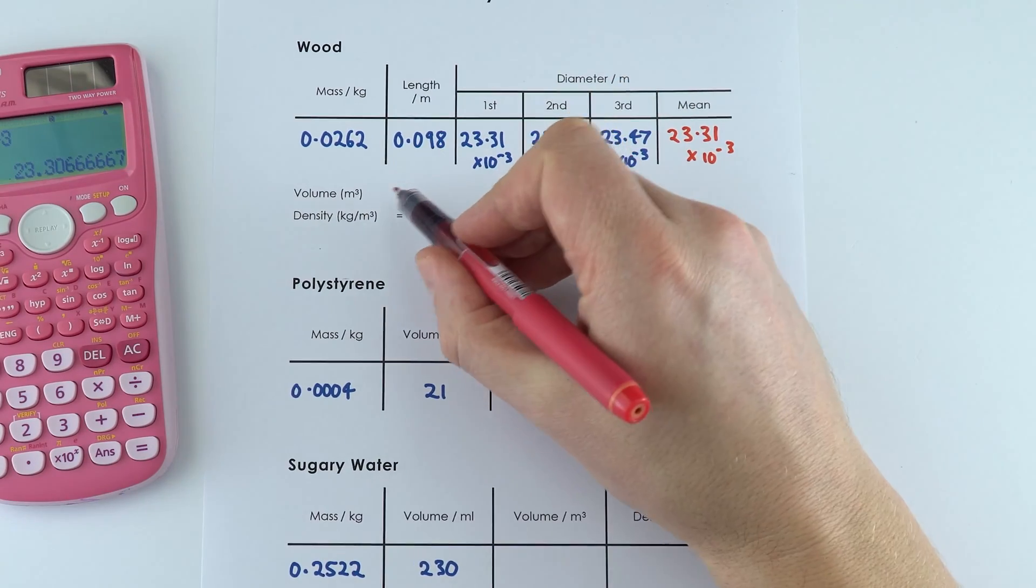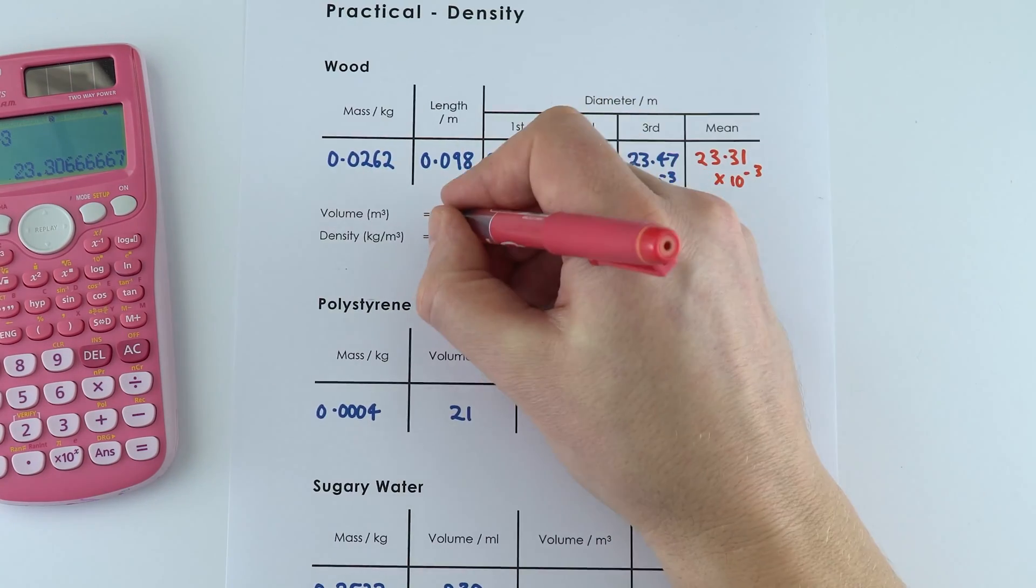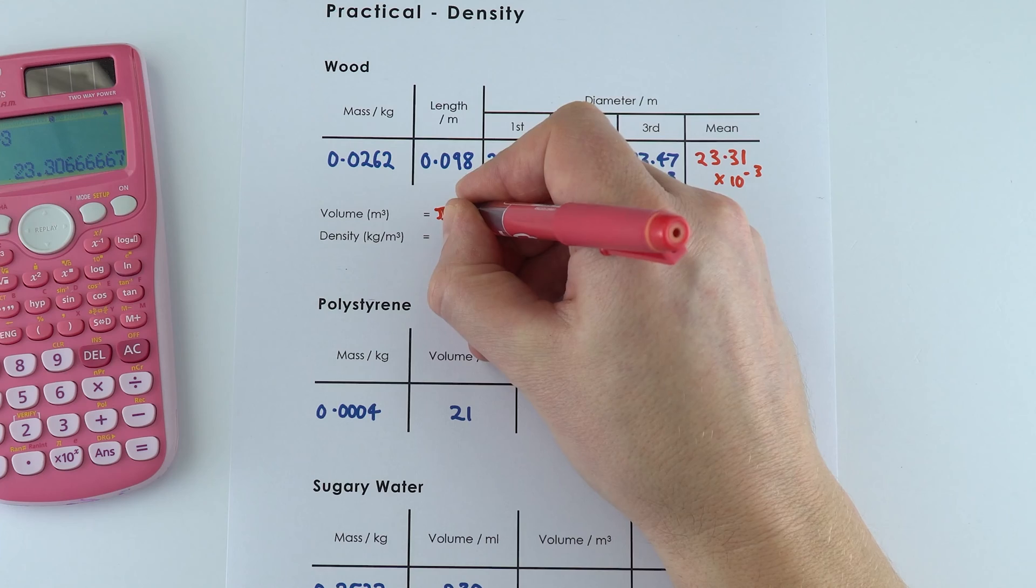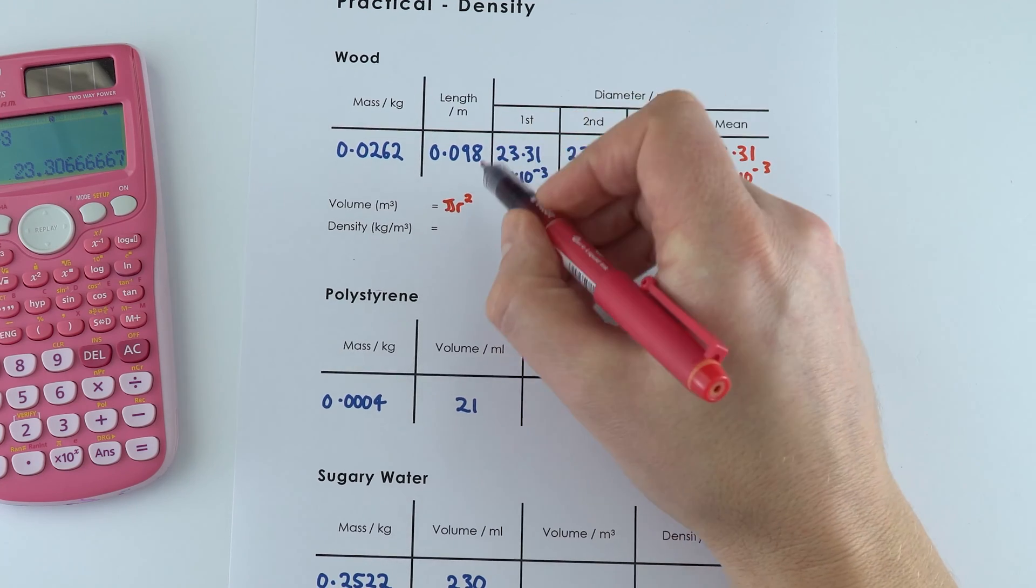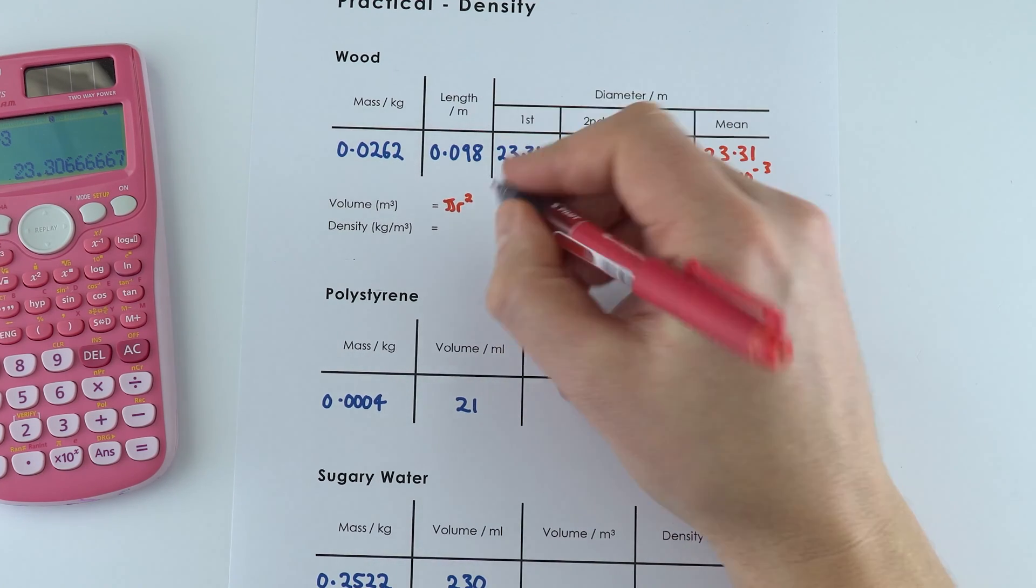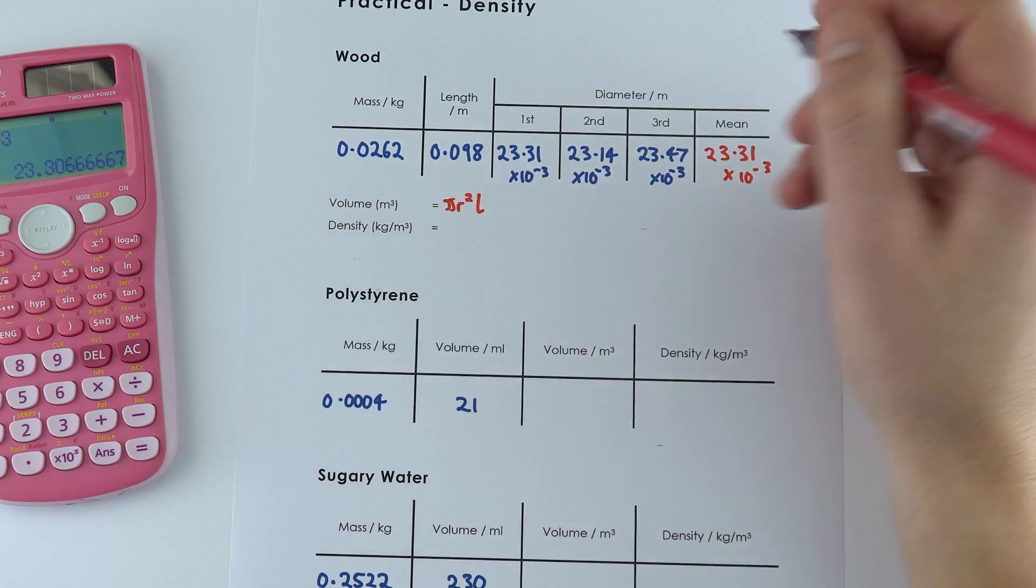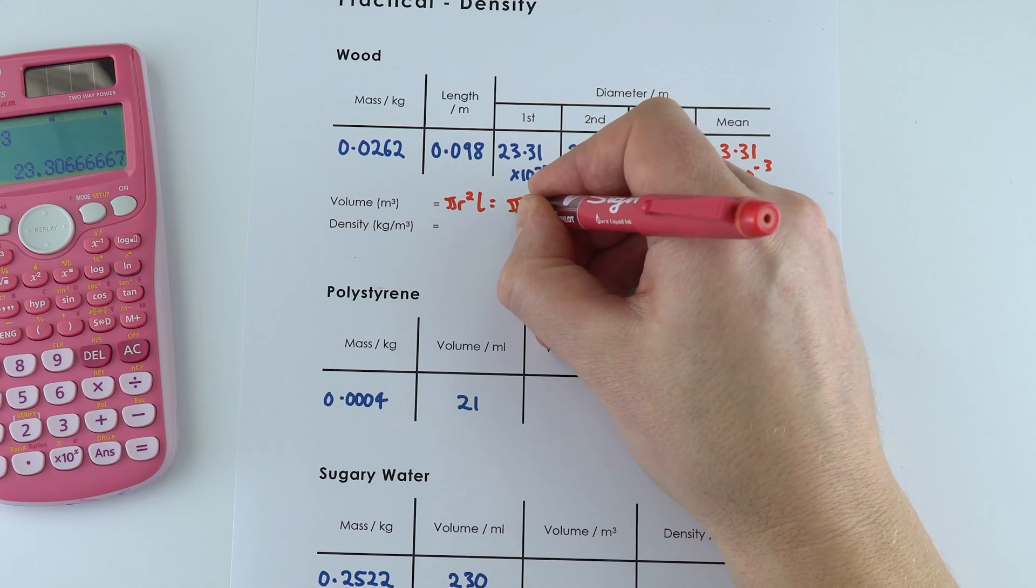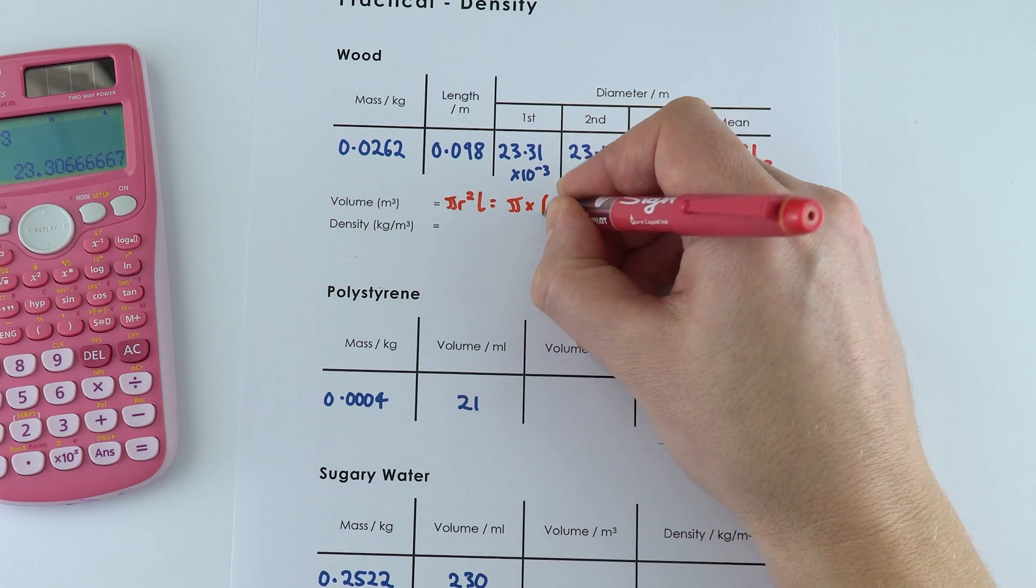Now when it comes to working out the volume of a cylinder, it's going to be equal to the cross-sectional area which is pi r squared times the height of that cylinder, or in this case the length. So it's pi r squared l. So it's going to be pi multiplied by the radius.